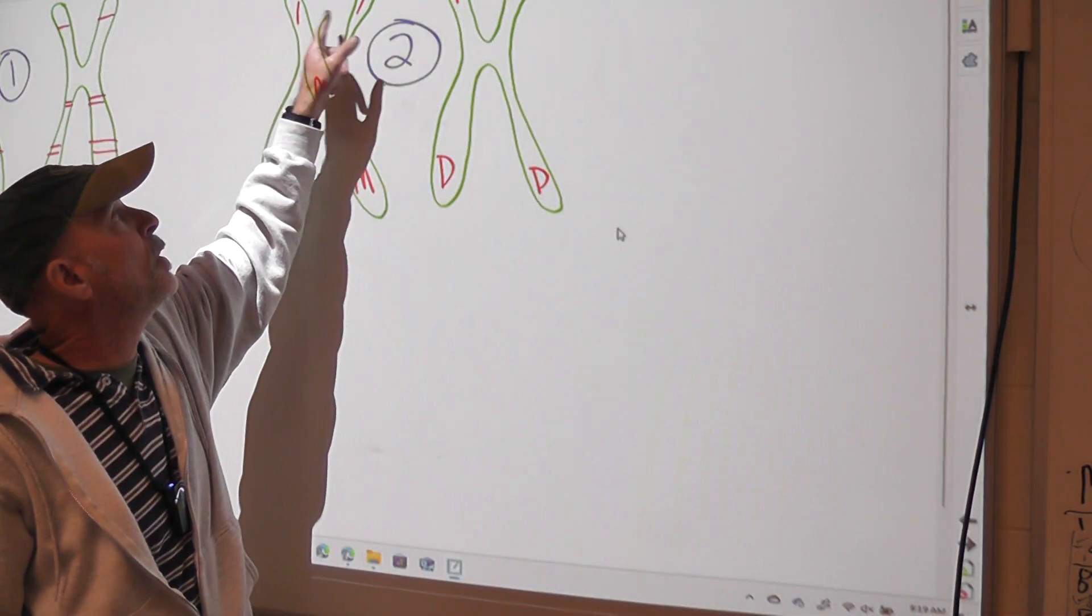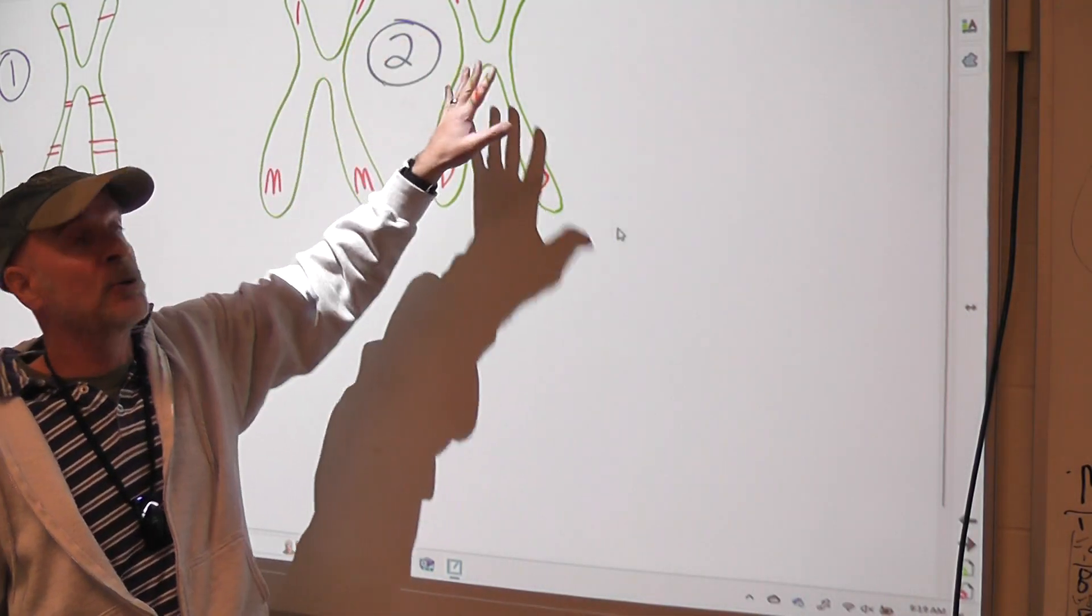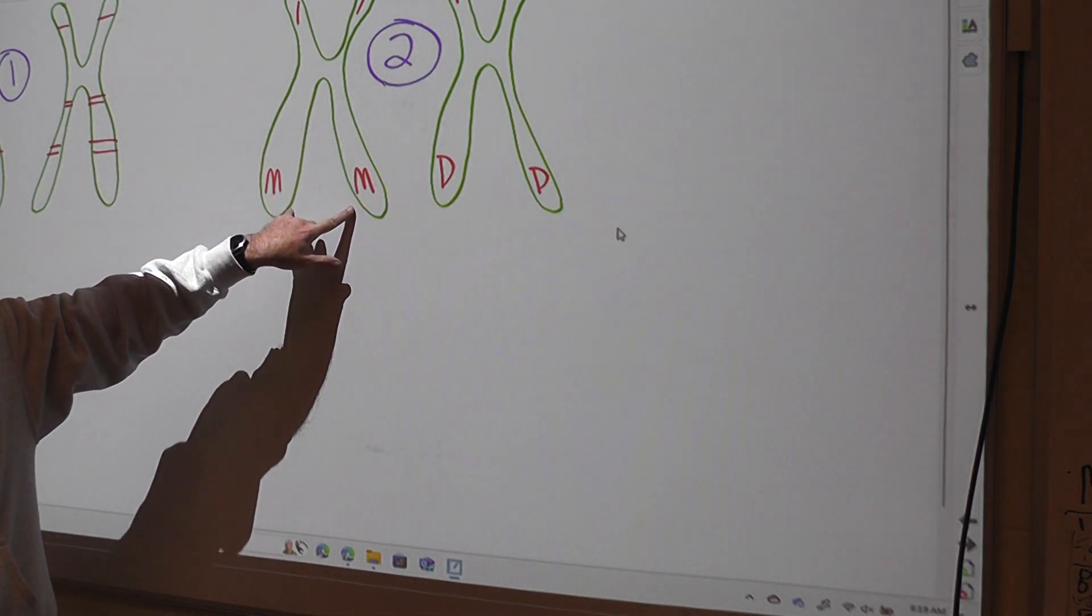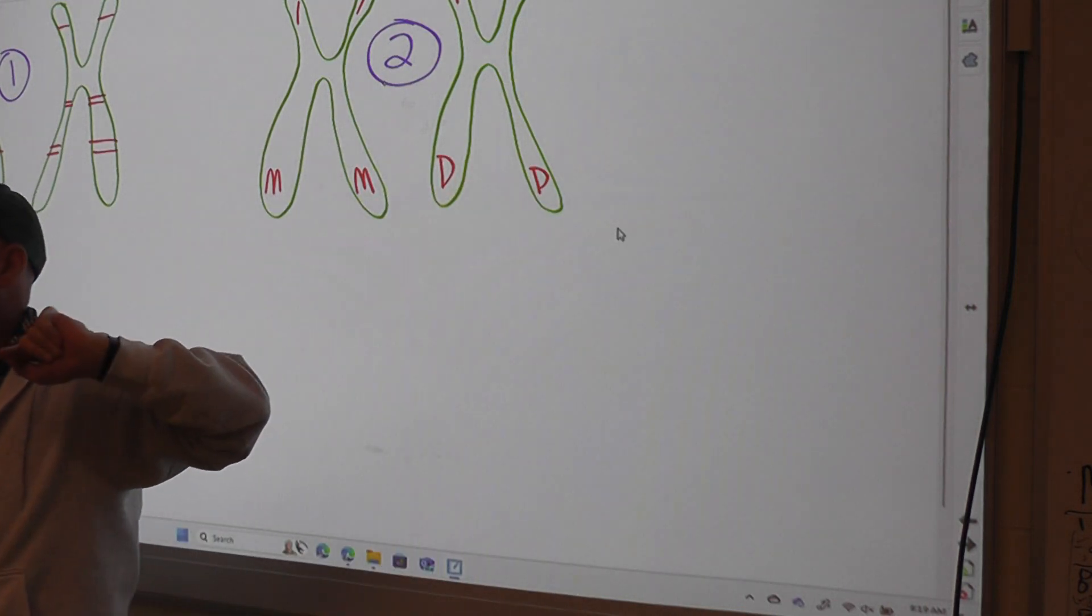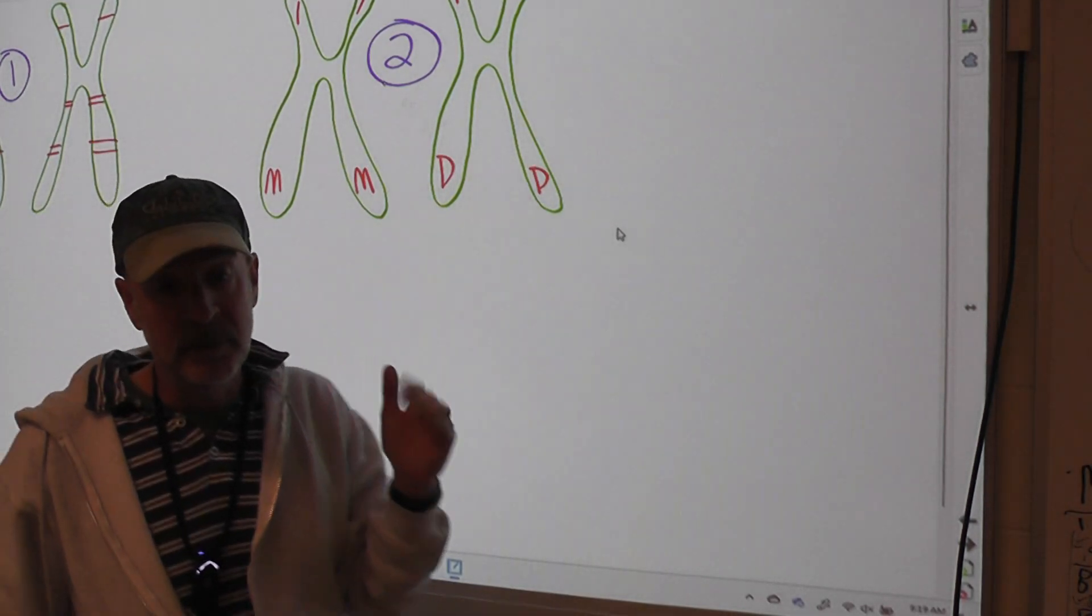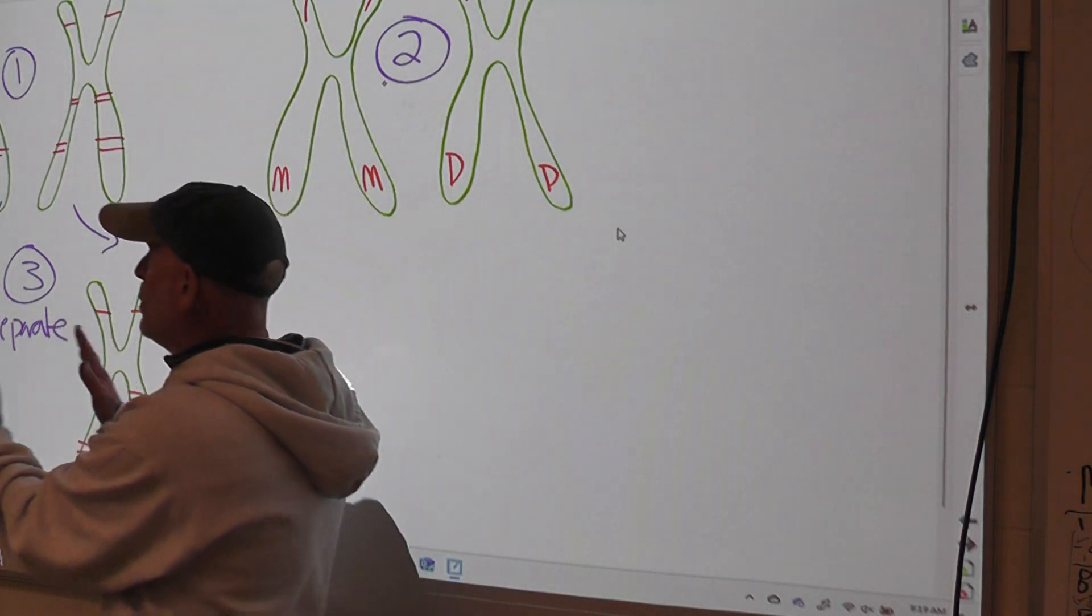So you've got four chromatids with number one, this chromosome and this chromosome, which will eventually get split apart. These two came from one parent. It doesn't matter what you put here, but I've just put an M for mom. This one came from the other parent, D for dad. So then you flip them back over and pull them apart.